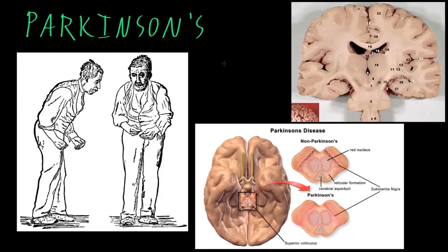Many motor abnormalities may occur, but the most common are slowed movements, a type of tremor, a type of increased muscle tone, a type of abnormal walking, and poor balance leading to falls. This is a very typical way that a person with advanced Parkinson's disease will walk — they're slow, they're stooped and shuffling, and often the hands have a tremor to them.